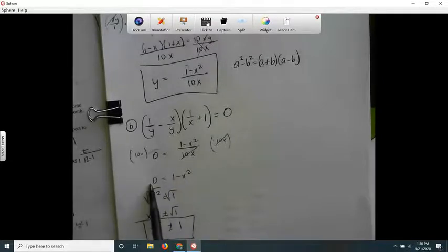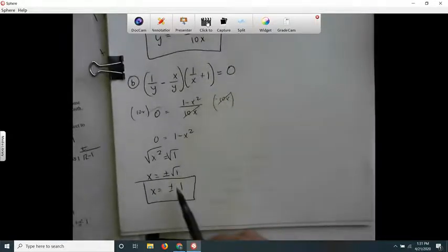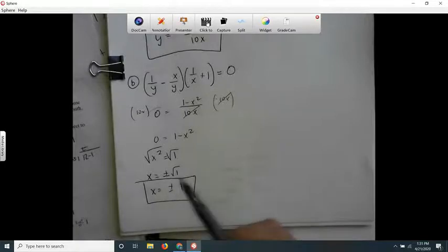I added x squared on both sides and took square roots. Remember when you take a square root of a variable, you have to have that plus or minus. The square root of 1 is 1, so x is plus or minus 1.